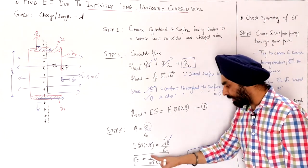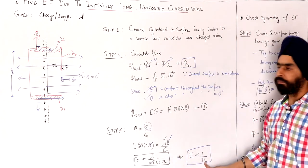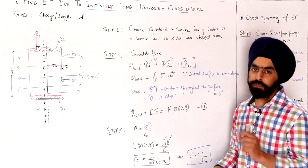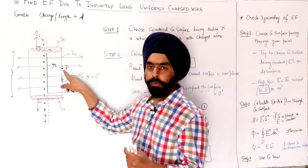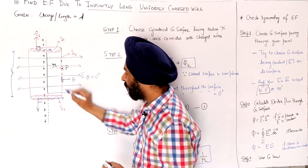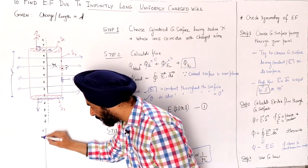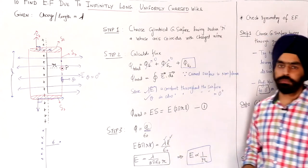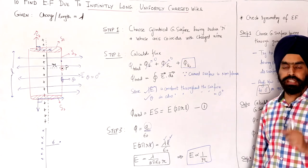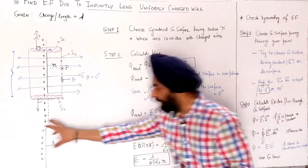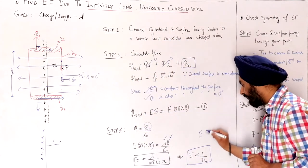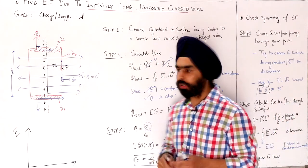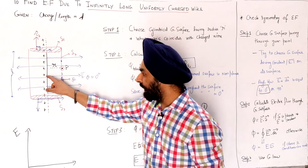Notice that E is inversely proportional to r. This expression gives the electric field at distance r from the wire — not just at point P, but at any point at distance r. So if you have an infinitely long wire and want the electric field at distance r, use this expression. Compare this with a point charge: for a point charge, E varies inversely proportional to r². But for an infinitely long wire, E varies as 1/r.